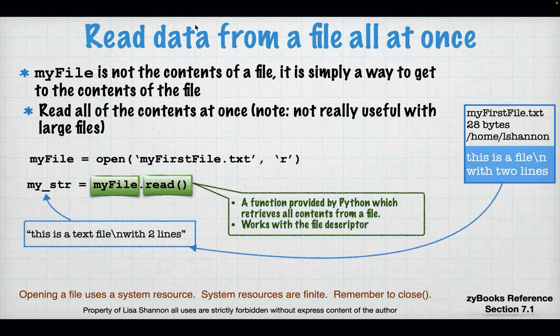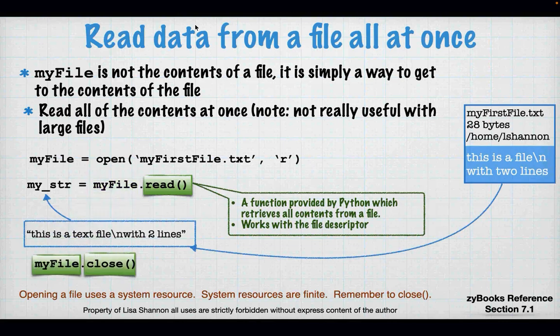Read doesn't get me the descriptor information — it actually gets me the contents of the file, whatever is in that file. And then I have to remember to close. Now, once I close, my file is still a variable, but anything I do on it is not going to matter — it's just going to give you an error. So you have to remember that when I open my file, do stuff with it, and close it, the file descriptor is no longer available. Anything you do with that variable will incur an error.